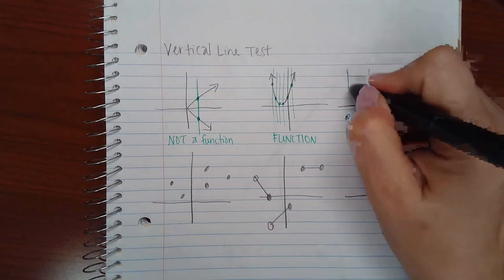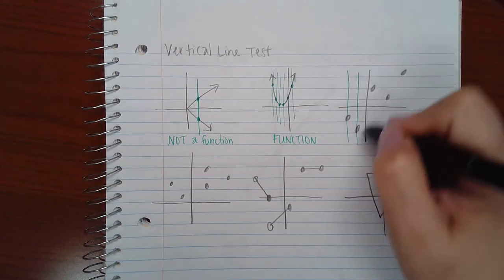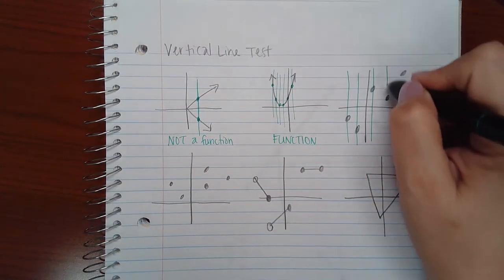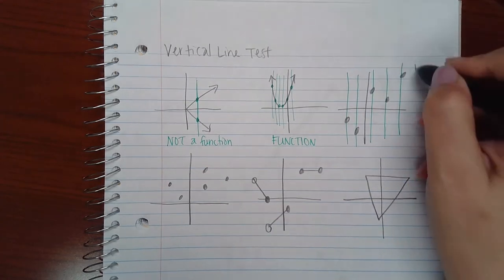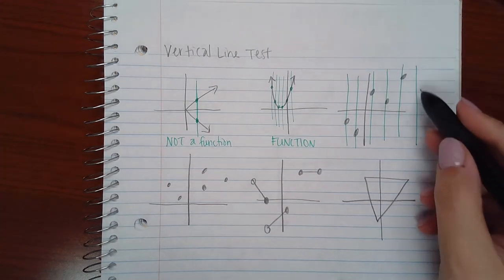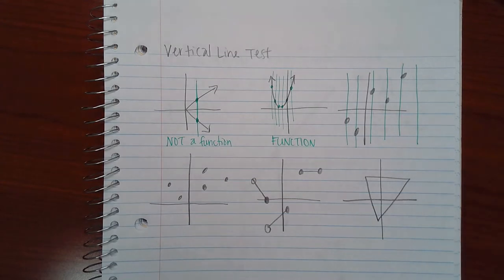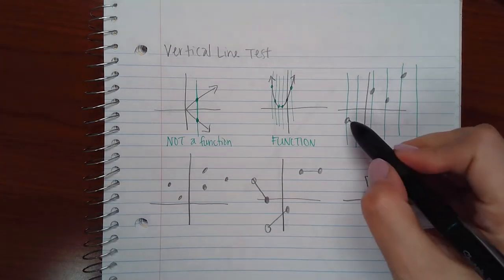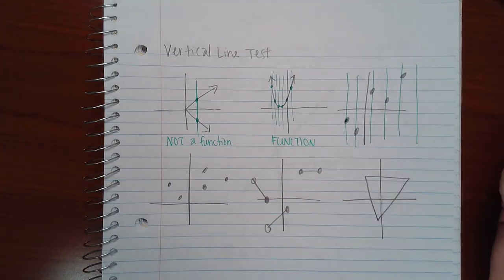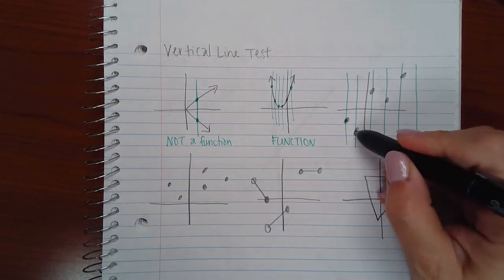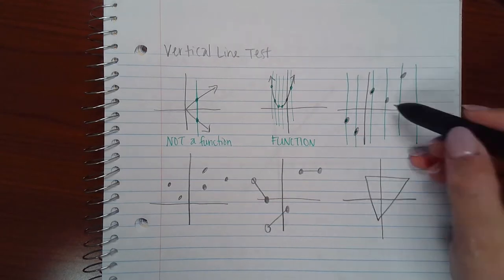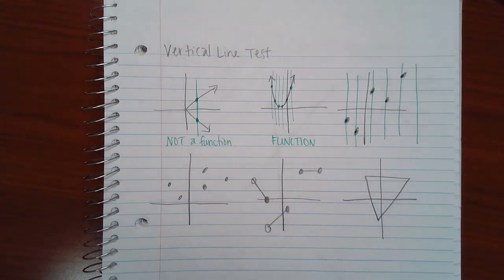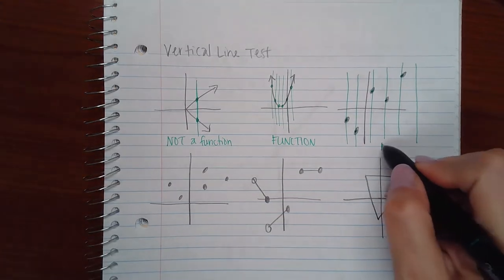Here, if I draw vertical lines, I could even put a vertical line here where it touches nothing. Nothing is okay. It's two or more that's bad. But notice, this line only touches the graph or the image once, this one only touches it once, this one only touches it once, once, once, so on and so forth. So this one is also a function.